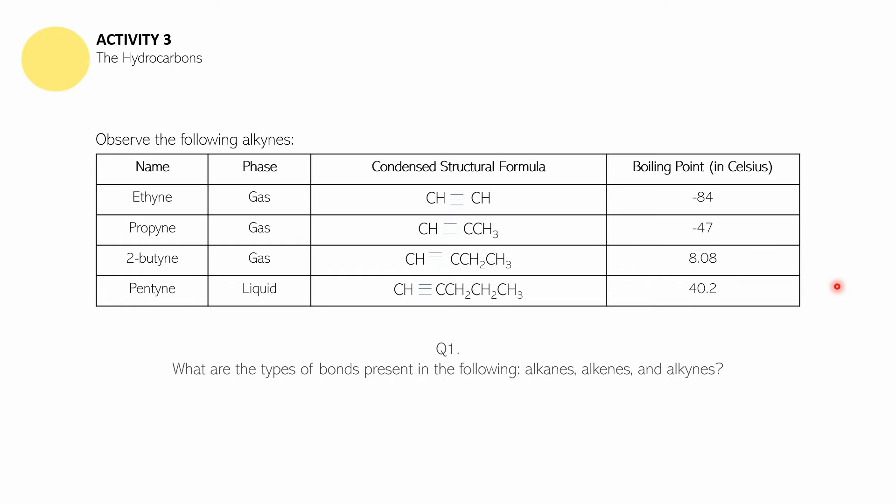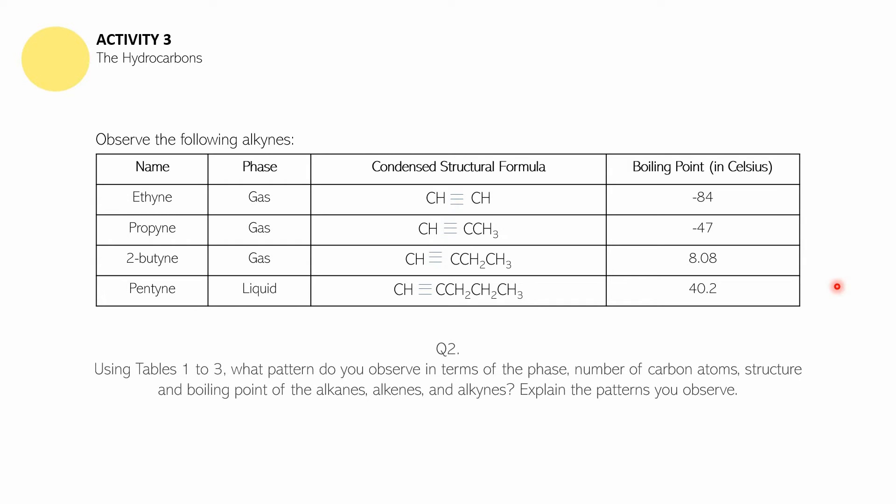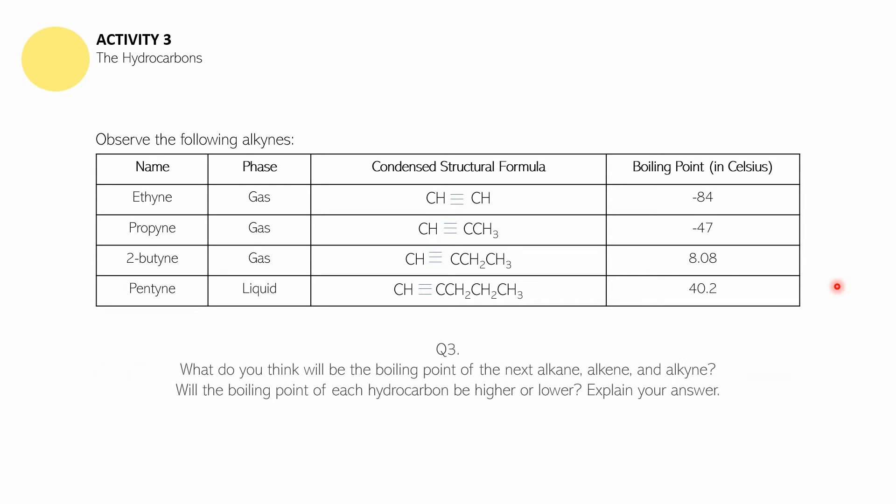Let us now answer the following questions. Question one: What are the types of bonds present in alkanes, alkenes, and alkynes? Question two: Using tables one to three, what pattern do you observe in terms of the phase, number of carbon atoms, structure, and boiling point of the alkanes, alkenes, and alkynes? Question three: What do you think will be the boiling point of the next alkane, alkene, and alkyne — will it be higher or lower?